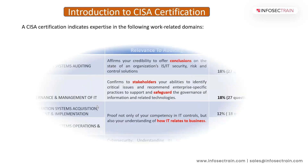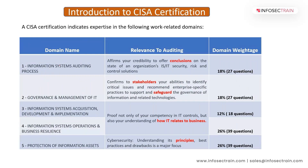The CISA certification has five domains. We have three columns in this table: domain name, relevance to auditing, and domain weightage. Domain one is the Information Systems Auditing Process. Its relevance to auditing is that it affirms your credibility and offers conclusions on the state of an organization's information systems, IT security, risk, and control solutions. This domain has a weightage of 18%, covering around 27 questions.